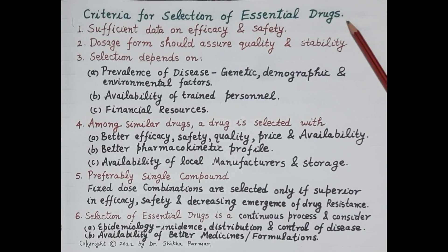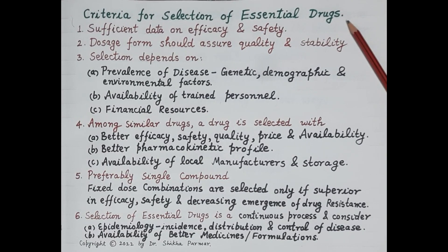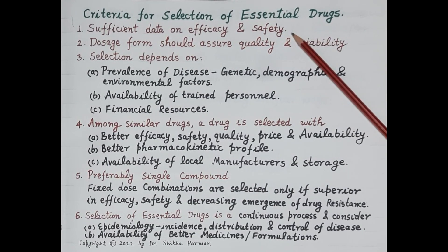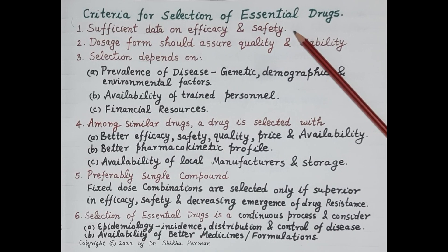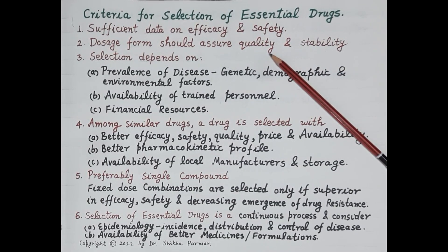Now let's understand the criteria laid down for the selection of essential drugs. The first and most important criterion is that the essential drug should be effective and safe, so sufficient clinical data should be available on the efficacy and safety of the drug.